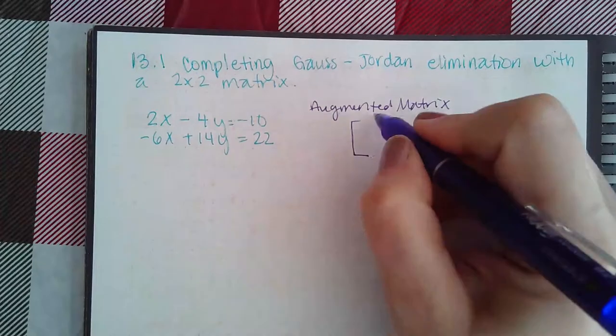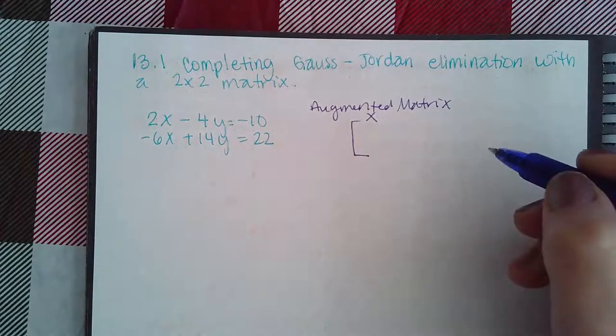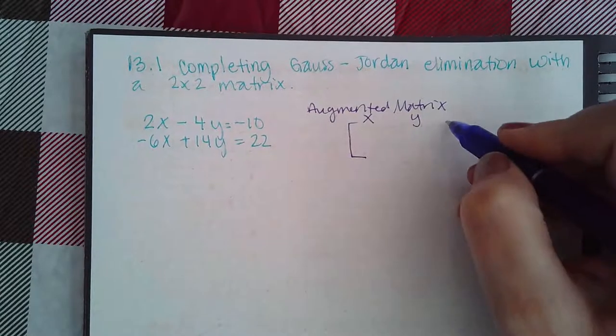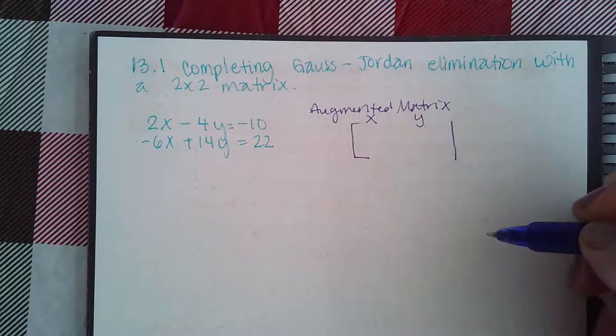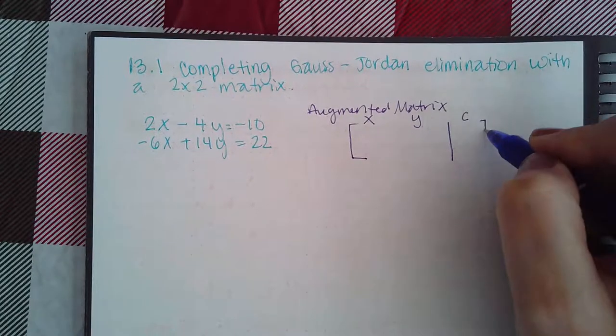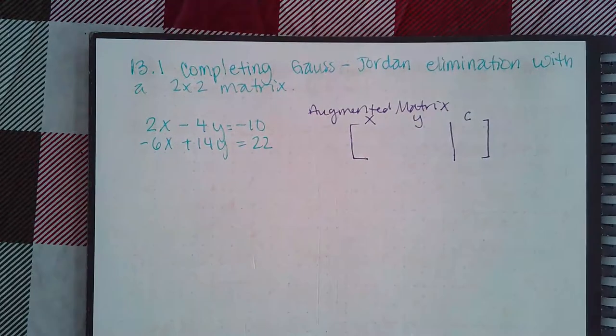And how do we do that? We're going to use one column for the coefficients of x, one column for the coefficients of y. This bar will represent the equal sign and then one column for the constants on the right side of the equal sign.